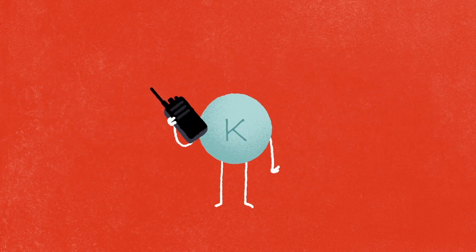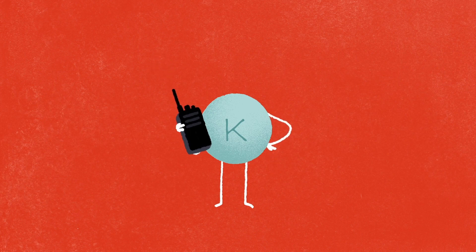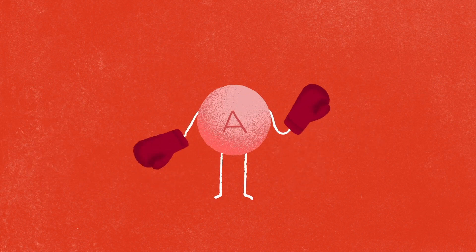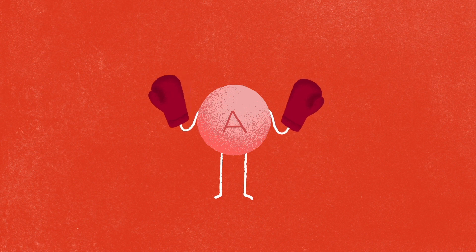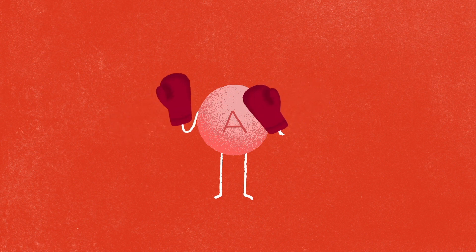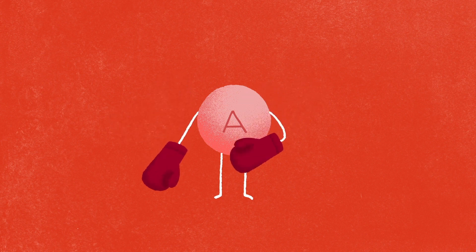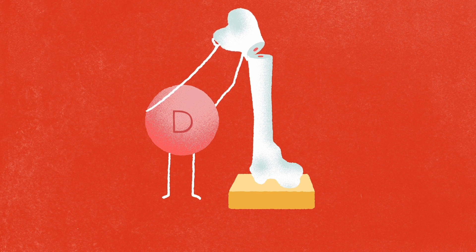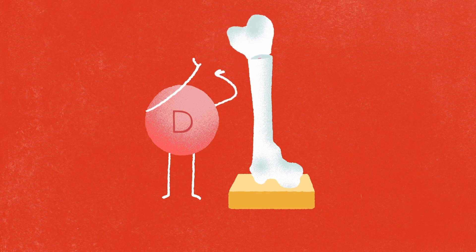While potassium contributes to the transmission of nerve messages. Among the vitamins, vitamin A is important for vision and immune defences, while vitamin D is involved in bone building.